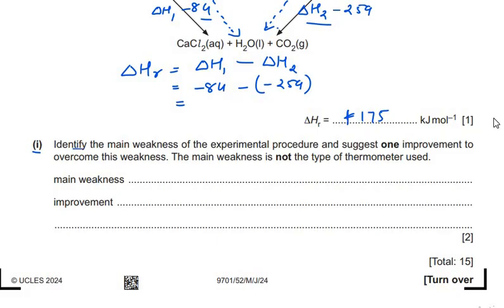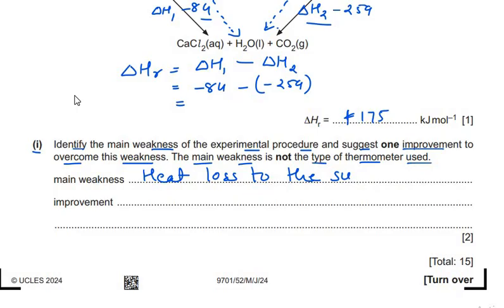The last part of question 1: identify the main weakness of the experimental procedure and suggest one improvement. The main weakness is not the type of thermometer used. The biggest weakness is heat loss to the surroundings, because the reaction is carried out in an open beaker. The improvement is to use a lid on the beaker to reduce heat loss — you can use any container with a lid in which a thermometer can also be inserted. This concludes question 1; question 2 will be discussed in the next video.